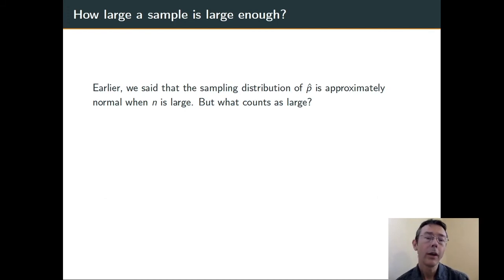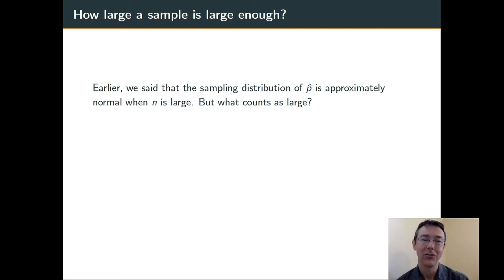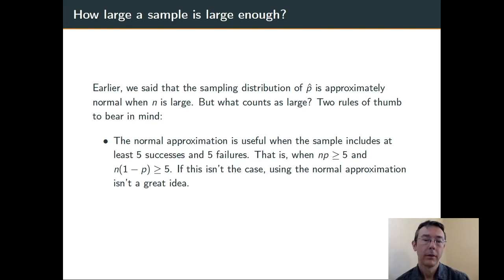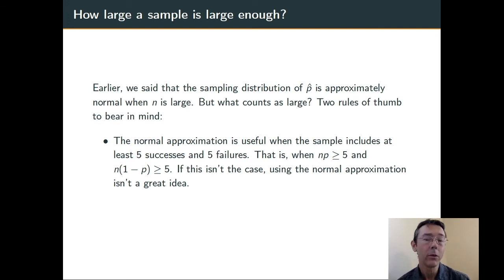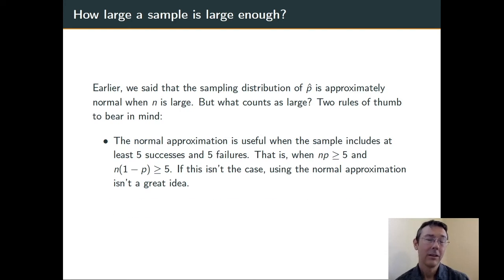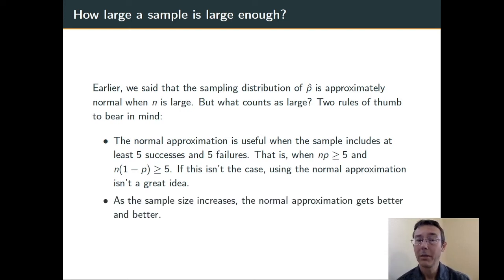One final point. When we were talking about the sampling distribution of p-hat, we said that it was going to be approximately normal when n was large, and then we based all of our statistical inference on that normal distribution. How large is large enough? Two rules of thumb to bear in mind. First, the normal approximation tends to work pretty well when the sample has at least 5 successes and 5 failures — that is, when np is greater than or equal to 5 and n times 1 minus p is greater than or equal to 5. If you don't have 5 successes and 5 failures, the normal approximation won't give you particularly accurate results and you should use another technique. Second, larger sample sizes are better — the normal approximation gets more and more tight as the sample size increases.